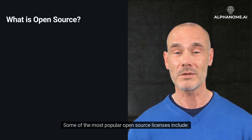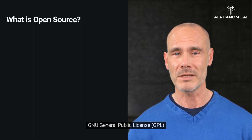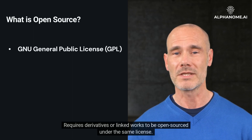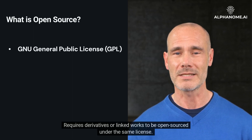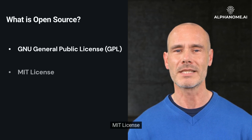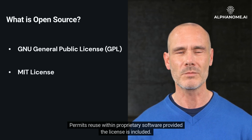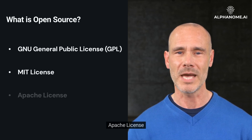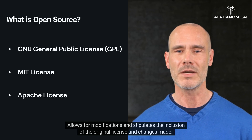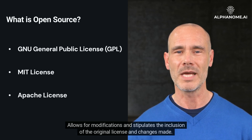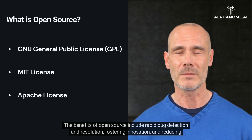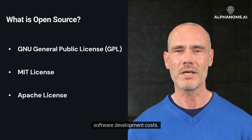Some of the most popular open source licenses include: GNU General Public License, GPL, which requires derivatives or linked works to be open sourced under the same license; MIT License, which permits reuse within proprietary software provided the license is included; and Apache License, which allows for modifications and stipulates the inclusion of the original license and changes made. The benefits of open source include rapid bug detection and resolution, fostering innovation, and reducing software development costs.